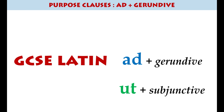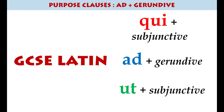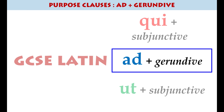As I've said in some previous videos, there are three different ways of making purpose clauses in Latin. If you haven't yet looked at my videos on 'qui' plus subjunctive and 'ut' plus subjunctive, they will definitely be worth checking out. This particular way of making a purpose clause uses the gerundive, which is a special form of the verb.